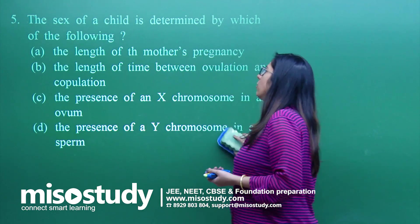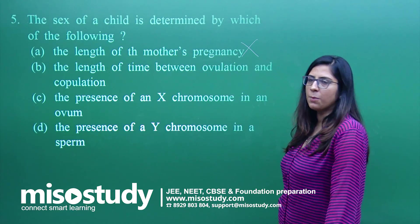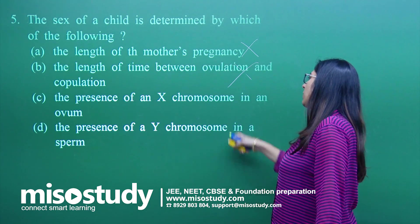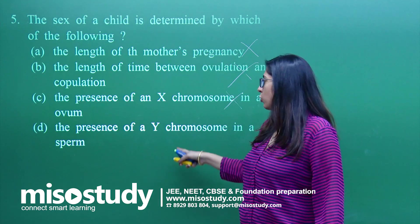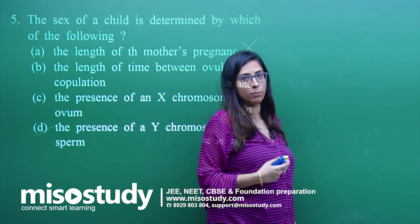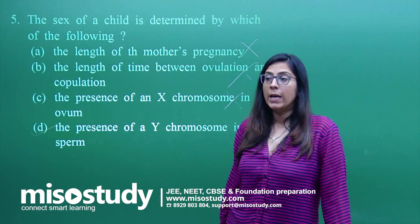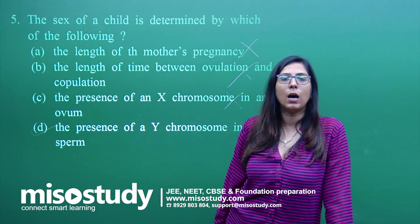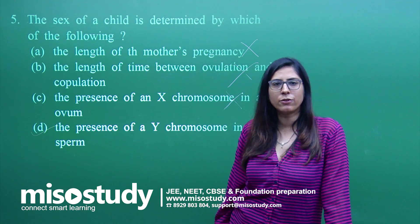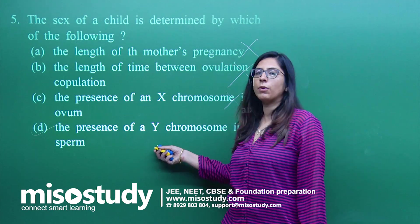This is the last question. The sex of a child is determined by which of the following? The length of mother's pregnancy - no, misconception. The length of time between ovulation and copulation - this is also a misconception. The presence of X chromosome in ovum - no, it's the Y chromosome. So I will go for this option: the presence of Y chromosome in sperm. In gamete formation for males, they are able to produce two different types of gametes - one containing X chromosome, other containing Y chromosome. If Y chromosome containing gamete fertilizes with the ovum, there will be formation of a male. If X type gamete fertilizes with X type ovum, there will be formation of a girl. So this is because of the Y chromosome, option D.